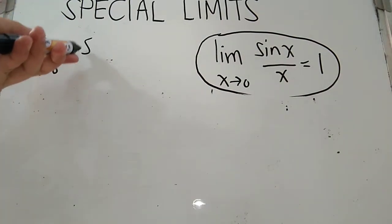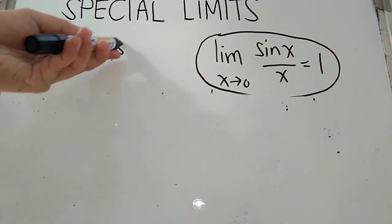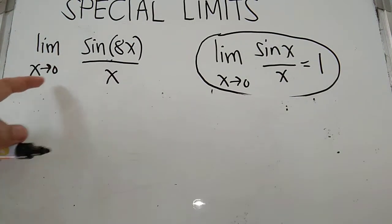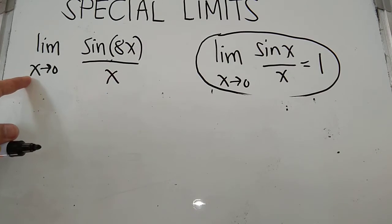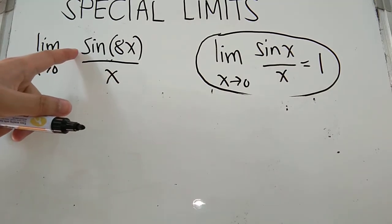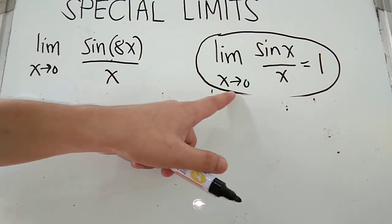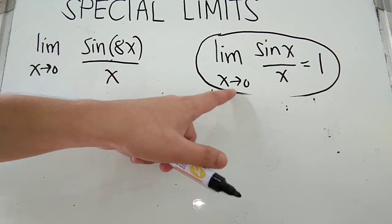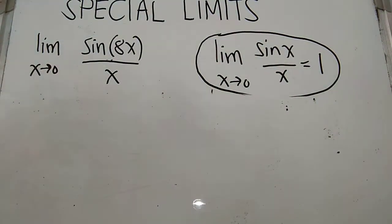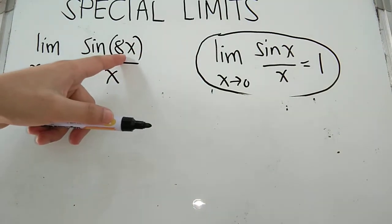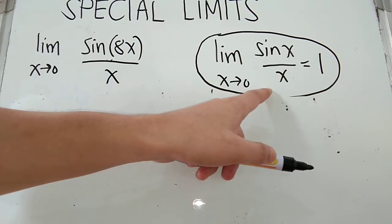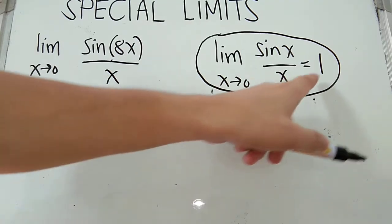Another example. If we have the limit of sin 8x over x as x approaches 0, the given function still has a trigonometric function sine, so we will still be using the special limit theorem: lim(sin x / x) = 1. Whatever the function inside sine must also be the function on the denominator part so that we can apply the special limit theorem.